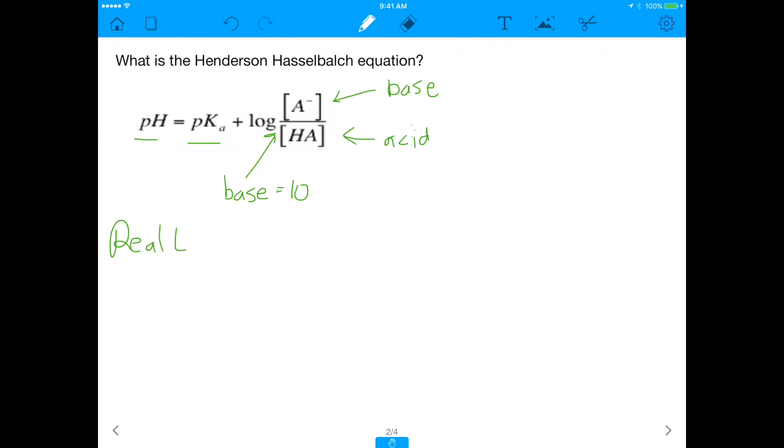The real-life application is the fact that your body uses a bicarbonate buffer system. In your body, you have this thing called carbonic acid, H2CO3. And that H2CO3 breaks down into H plus and HCO3 minus. And now if you wanted to apply the Henderson-Hasselbalch to this case, you'd say pH is equal to pKa of carbonic acid, H2CO3, plus log of bicarbonate, HCO3 minus over H2CO3.